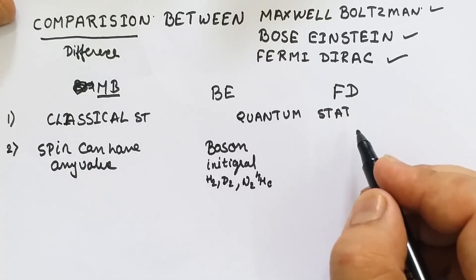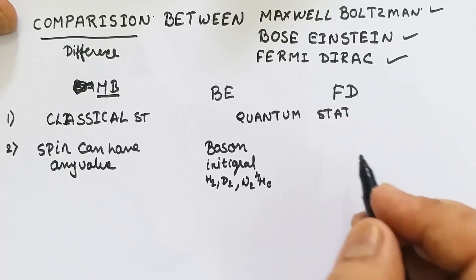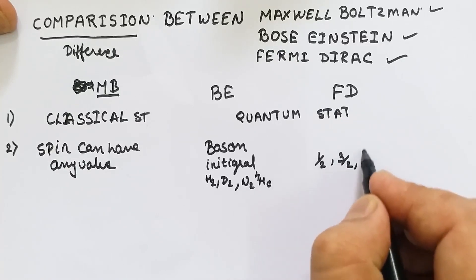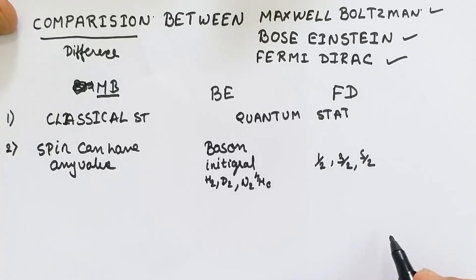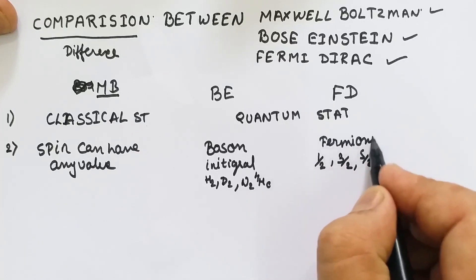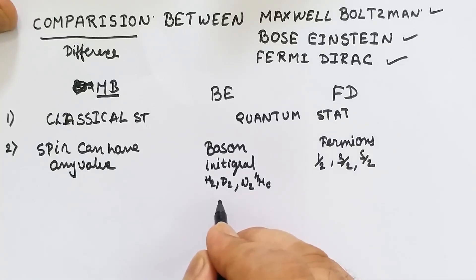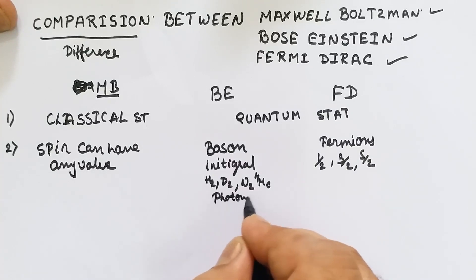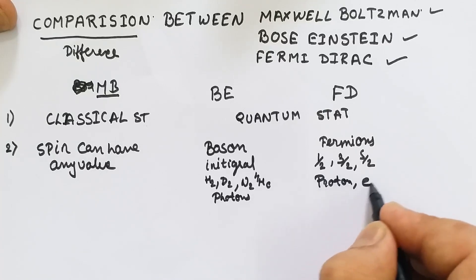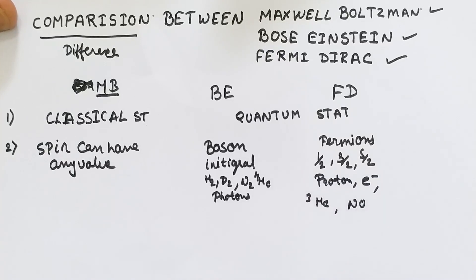In Fermi-Dirac statistics, particles having half-integral spin — such as 1/2, 3/2, or 5/2 — are considered, and these particles are known as fermions. One additional example from Bose-Einstein: photons are also bosons. Examples of fermions include protons, electrons, He-3 (helium-3), and nitrous oxide.